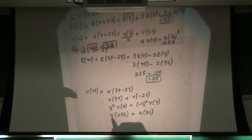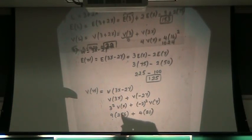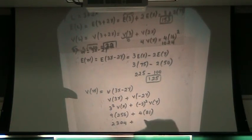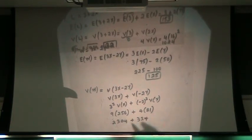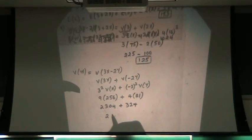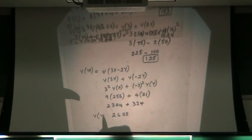So working through the arithmetic: 9 times 256 is 2304, plus 4 times 81 is 324. That gives us 2628, which equals the variance of W.